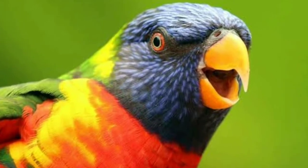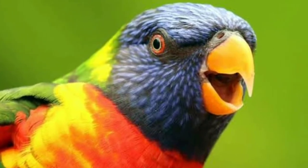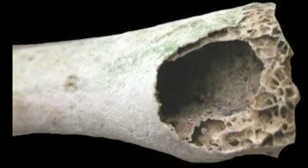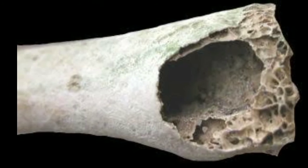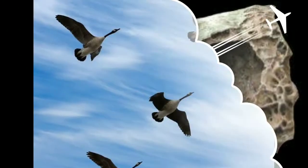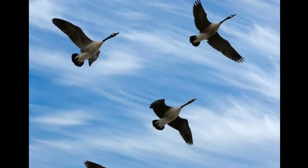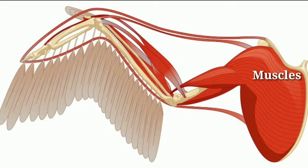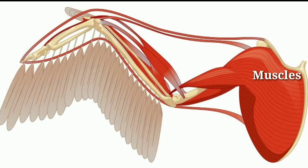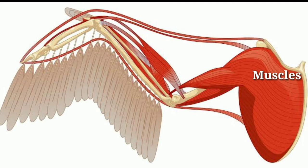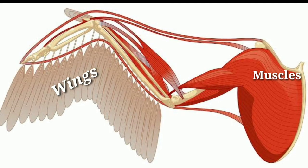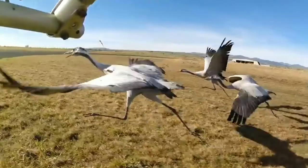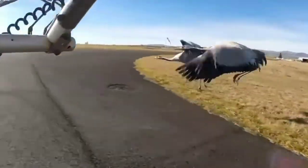Their bones are hollow and light, and are filled with air. This helps the bird to fly. Birds have strong muscles called flight muscles. The wings are attached to these muscles and they help the wings to move up and down.